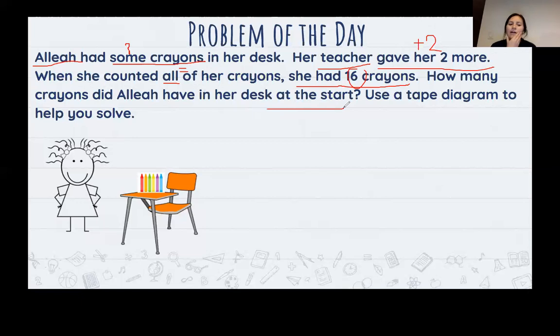How many crayons did Aaliyah have in her desk at the start? So what are we trying to figure out? I'm trying to figure out how many crayons she has all together. No, because we already know she already has 16 crayons all together. Are we trying to figure out how many more her teacher gave her? No, because we already know her teacher gave her two more. What are we trying to figure out? We are trying to figure out how many she had at the beginning. So you can build it using a number sentence. You can use a number bond. If that helps you, you can do it in your brain. Or you can use a tape diagram. I'm going to build a tape diagram because that helps me the most.